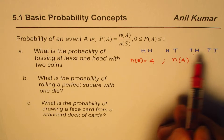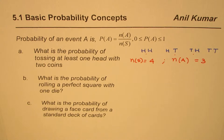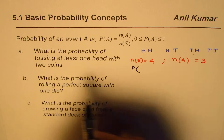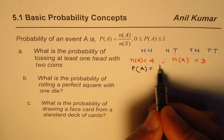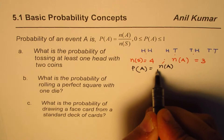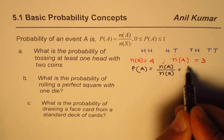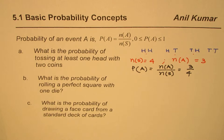Tail-tail does not have any head, so NA is three. From this information we can write that the probability of tossing at least one head is equal to the ratio of favorable to total outcomes, that is three over four. So three over four is the probability of tossing at least one head with two coins.